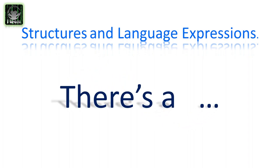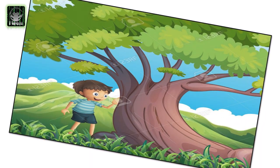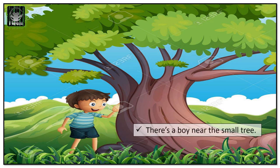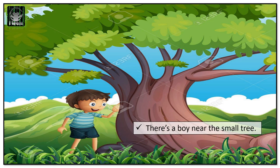Now let's learn 'there's a.' We use 'there's a' to say something or someone is in a position. Look at this picture — do you see the boy standing near the tree? So we say: there's a boy near the tree. Or else you can say: there's a tree next to the boy.